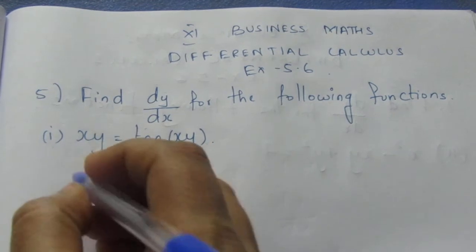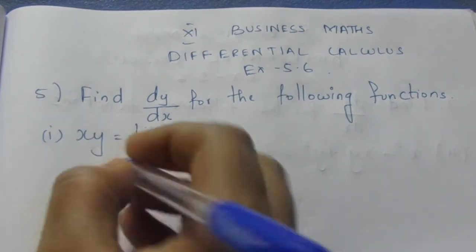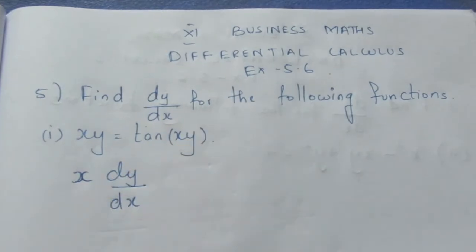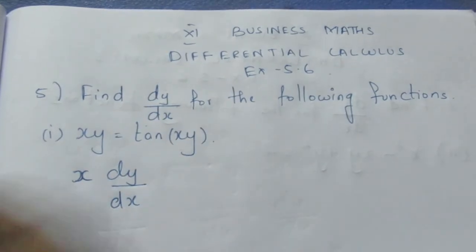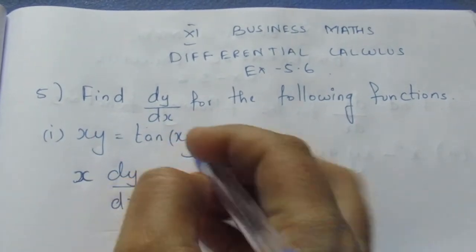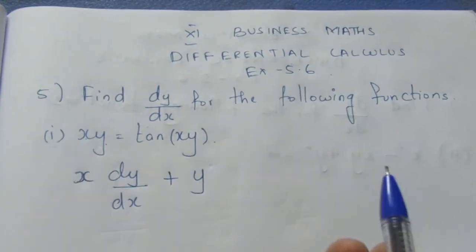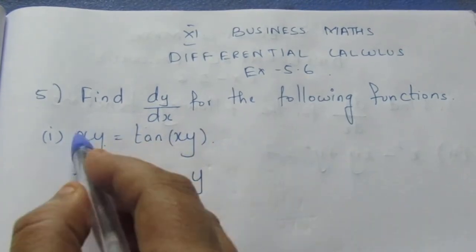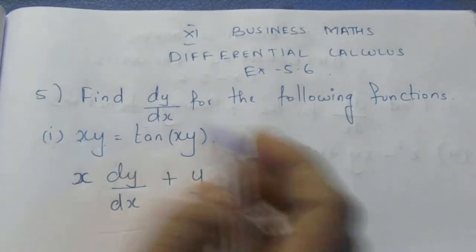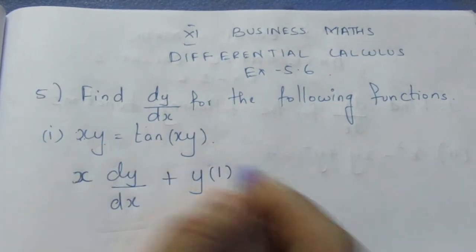Applying the product rule: keep the first function and differentiate the second — differentiating y gives dy by dx. Then keep the second and differentiate the first — differentiating x gives 1. So the left side becomes x dy/dx plus y times 1.